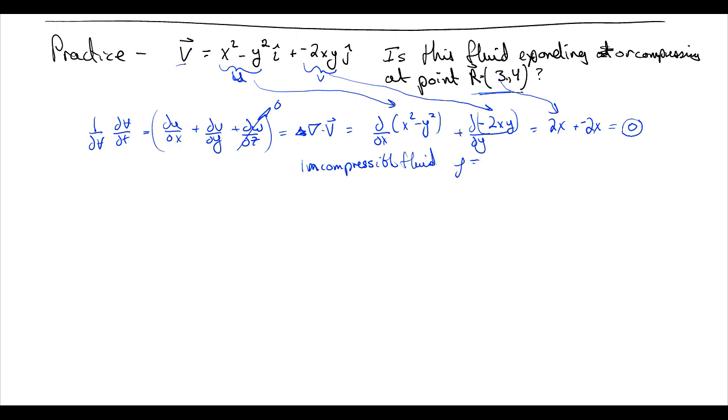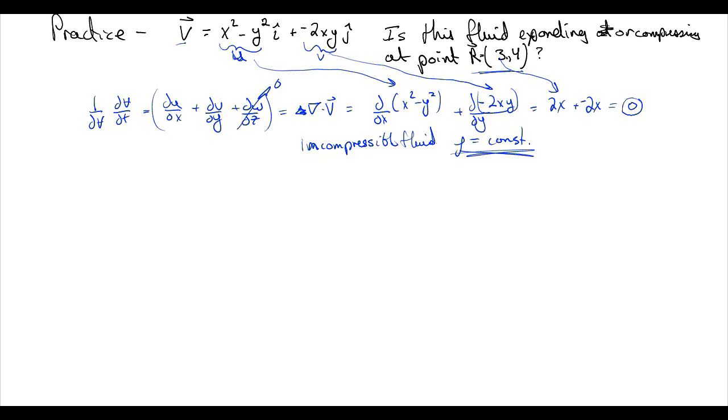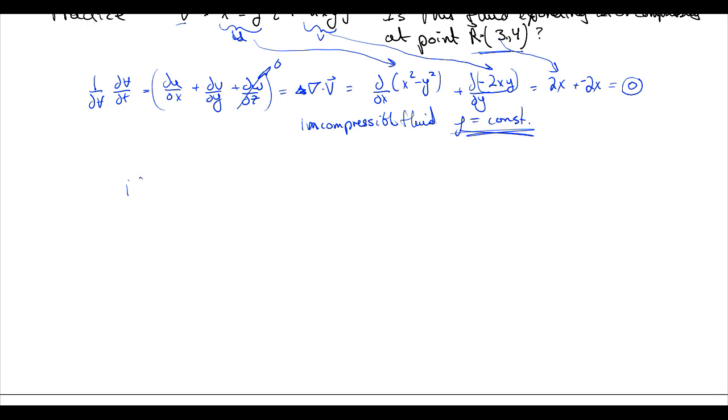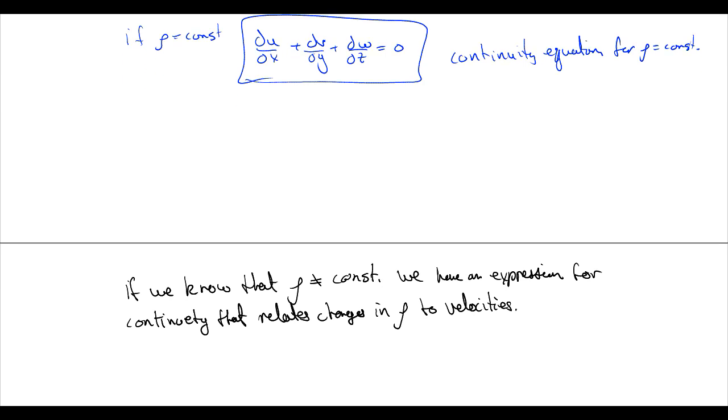So its density is equal to a constant. And this gives us a hint. If our density is equal to a constant, then we know, which is a good approximation for water, for example. A lot of liquids, density is mostly equal to constant. We know that du/dx plus dv/dy plus dw/dz has to equal zero, which is something we call a continuity equation. For density is equal to a constant.